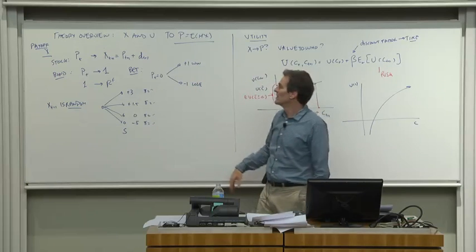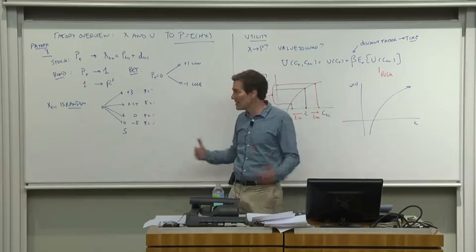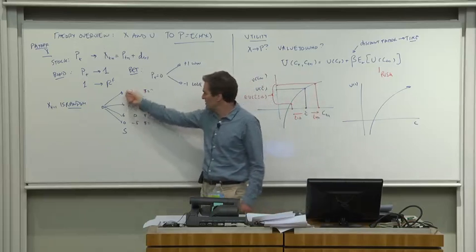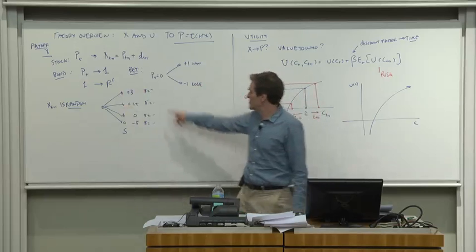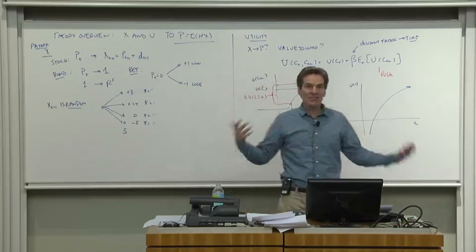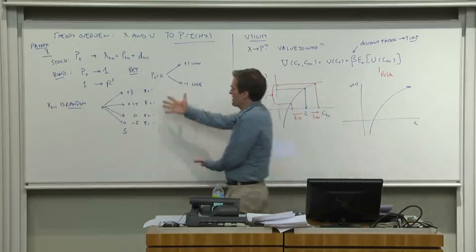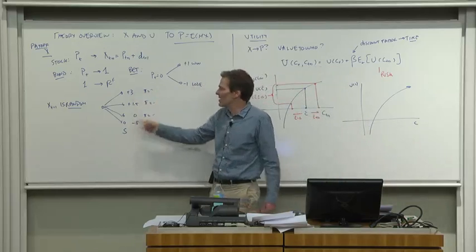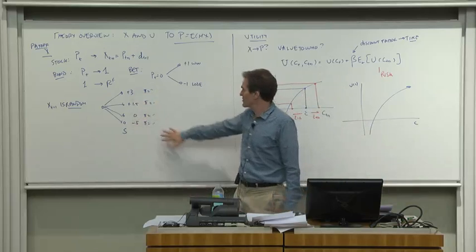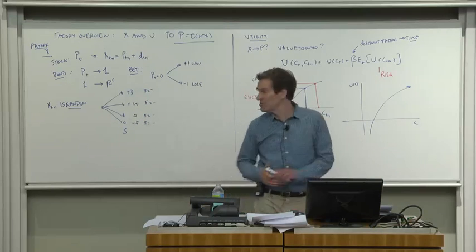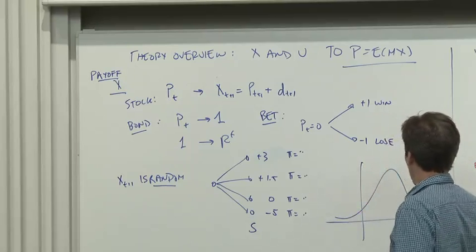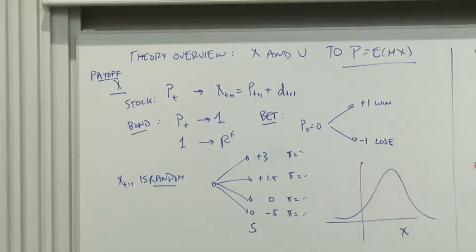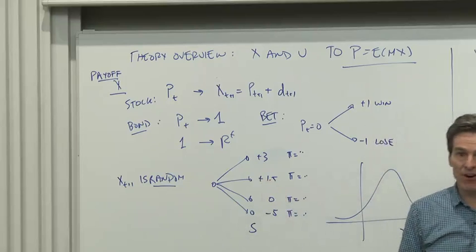The payoff is random. You don't know what's going to happen. It's a random variable. The way to think about random variables is there's multiple states of nature, which we'll denote S, each of which has a probability associated with it. Here's the list of the things that could come out. I just did a simple example. The payoff could be 3, 1.5, 0, or minus 5 with associated probabilities. Of course, we will usually think of probabilities as being continuous. We'll draw something like a distribution of possible values for X along with a probability distribution. But you need to keep in mind that X is potentially a random variable.